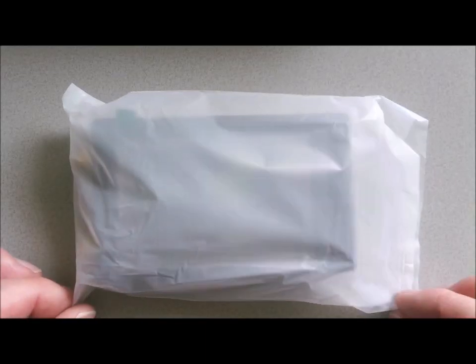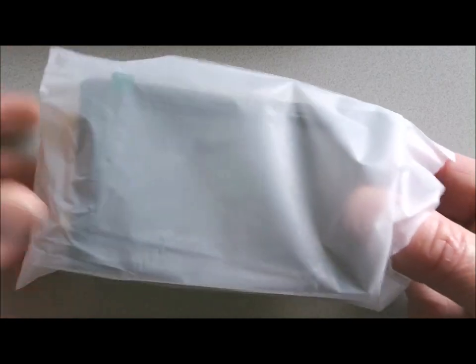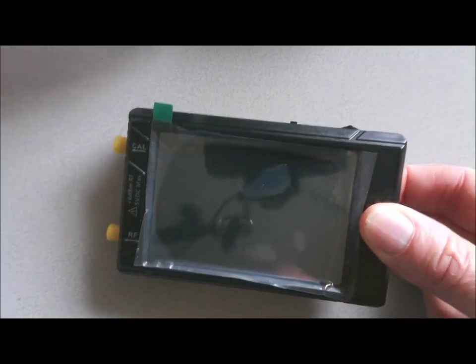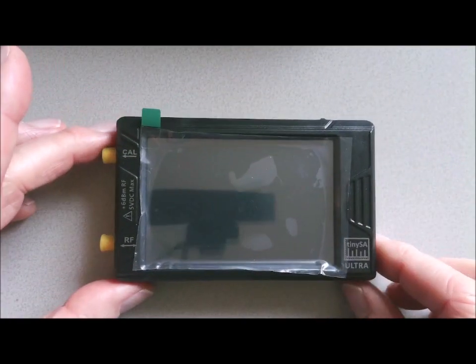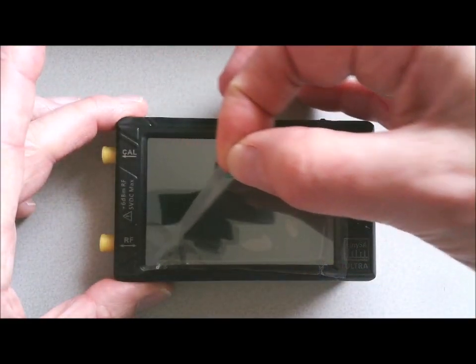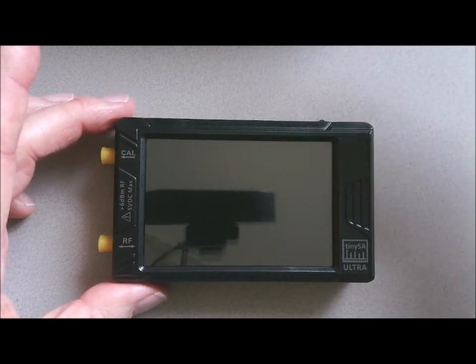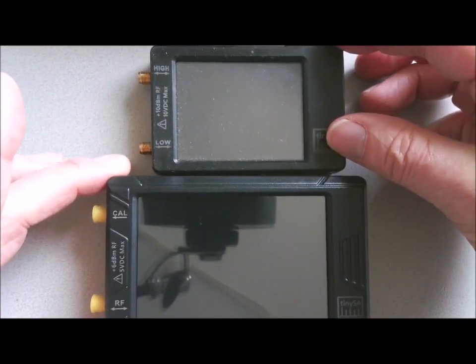There's the plastic bag with inside the TinySA. Let's look how it looks. Let's remove the foil and put a TinySA next to it so you have some comparison of the size.